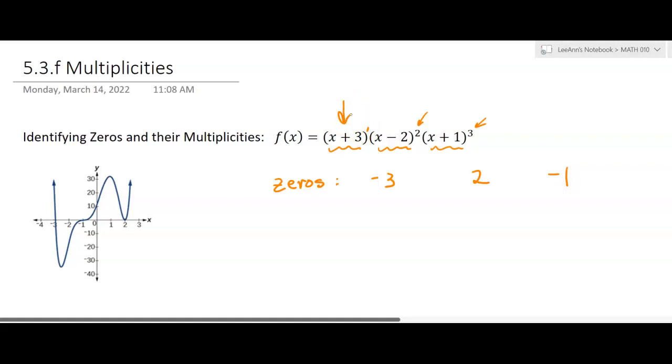Negative 3 for the first one, 2 for the second one, negative 1 on the last one. Now each of those zeros has a multiplicity. The multiplicity for negative 3 is 1, because that's the exponent. The multiplicity for 2 is 2, because that's that exponent, it's to the second degree, or an exponent of 2. And then negative 1 is going to have a multiplicity of 3.